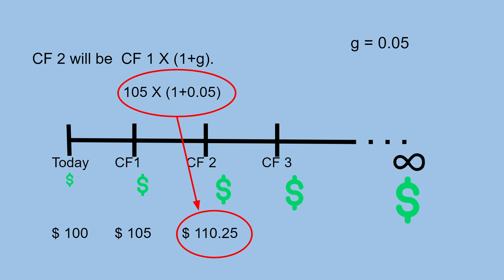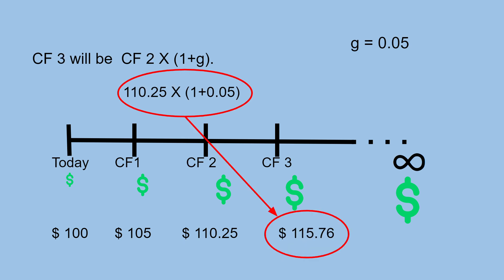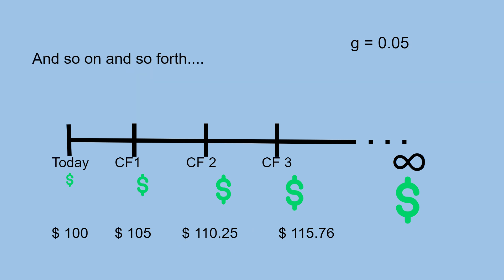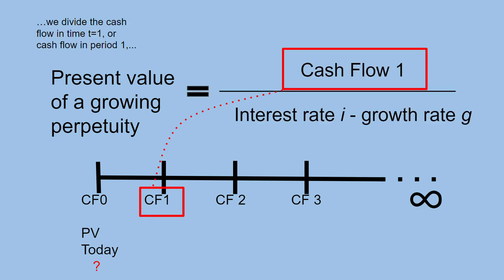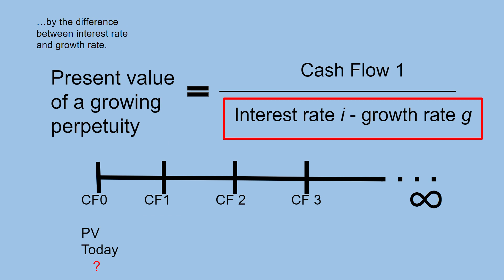Cash flow 2 will be cash flow 1 times (1 plus G). Cash flow 3 will be cash flow 2 times (1 plus G), and so on and so forth. To calculate the present value of a growing perpetuity today, at time t equals 0, we divide the cash flow at time t equals 1 by the difference between interest rate and growth rate.